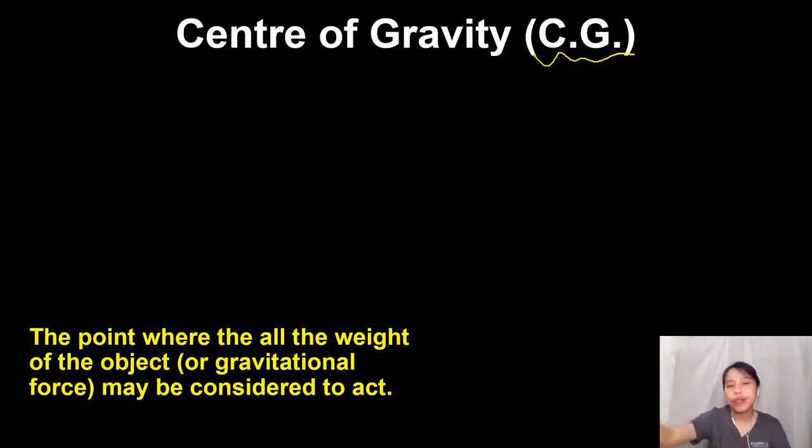the point where all the weight of the object can be considered to act. So, for example, if you drew those earlier things, like the dot, and we say, oh, this is the weight acting on this object, that dot is basically the center of gravity. And that's what the whole sentence means.